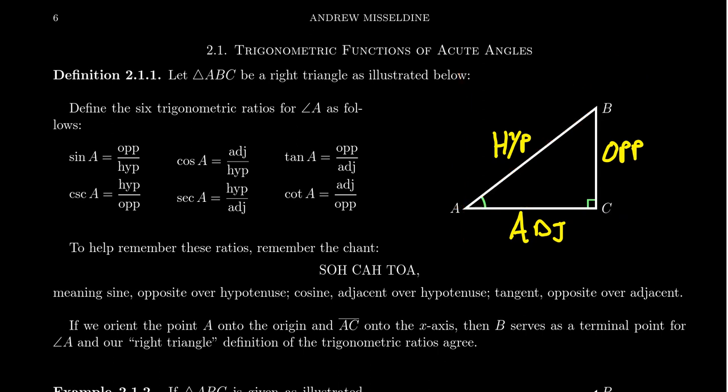When one studies trigonometry, you often see the previous definition first, or maybe the right triangle definition first — it doesn't really matter because the two overlap. Honestly, the right triangle approach feels a little less abstract. Also, because right triangle trigonometry coincides with the trigonometry introduced previously, things like the reciprocal identities are still true: cosecant is the reciprocal of sine, secant is the reciprocal of cosine, cotangent is the reciprocal of tangent. We also get that sine divided by cosine equals tangent — the quotient identities still hold.